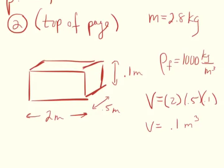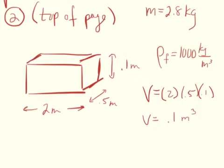Density is always mass over volume. Here's the mass of the actual mattress and here's the volume. What's 2.8 divided by 0.1? It's 28. So the density of the mattress is 28 kilograms per cubic meter. The density of water is 1,000 — the density of the mattress is 28, which is less than water. Therefore it will float.